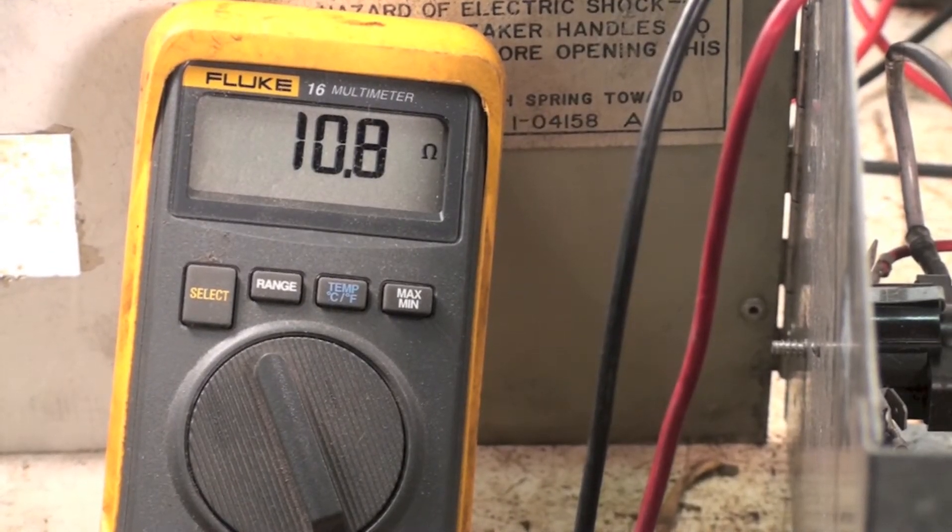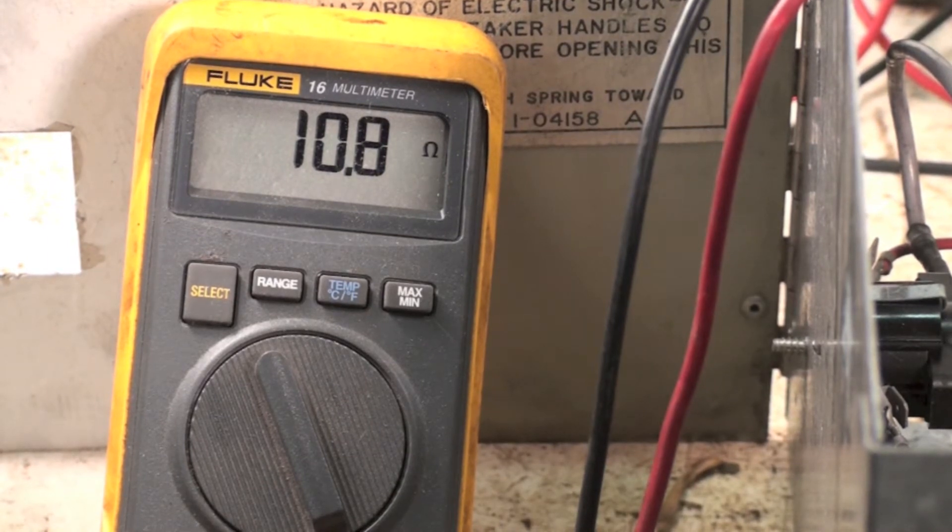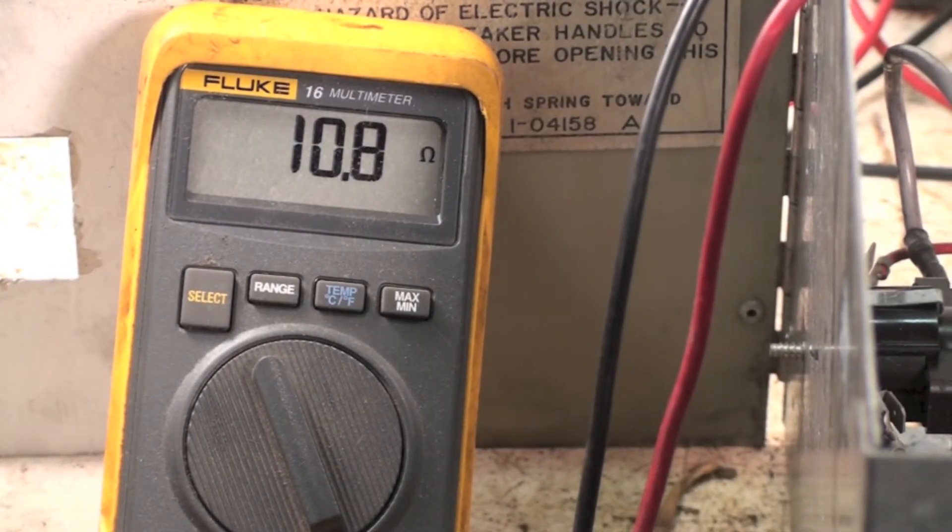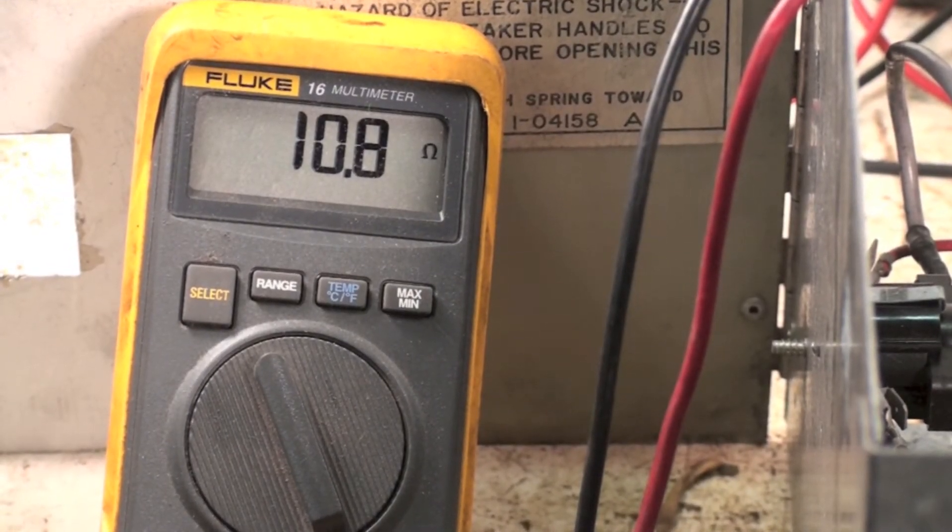So let's see how this works. Okay, we're showing 10.8 ohms across the element cold before we've started it up.